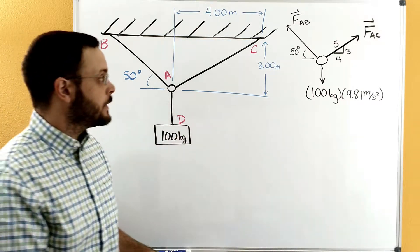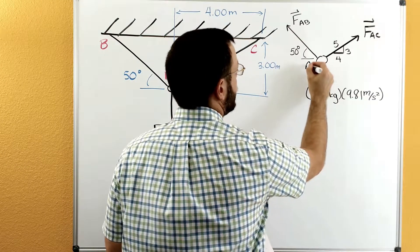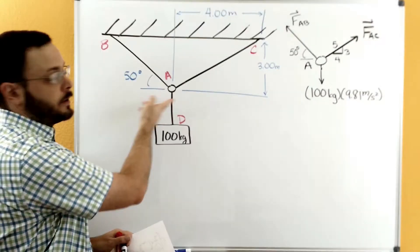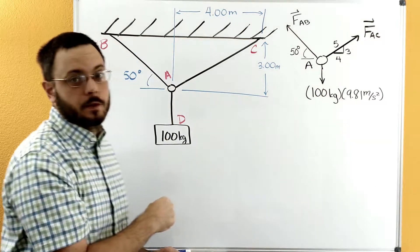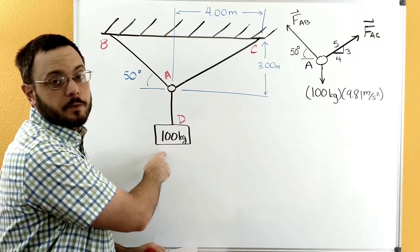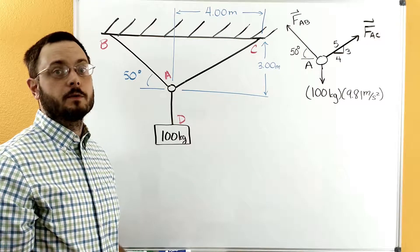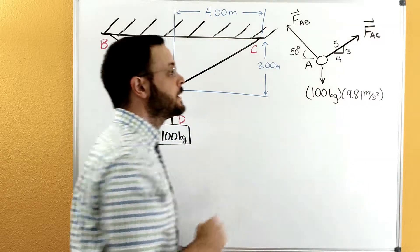So we're going to redraw A over here. So here's our ring A, where everything connects together. Then, where we cut through this cable, we instead put the force that's in the cable. This was a mass of 100 kilograms, and so we need to multiply that by 9.81 so that we can convert it into newtons. So we have this 100 kilograms times 9.81.